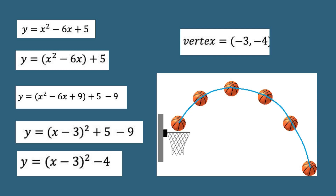We have the equation f(x) = x² − 6x + 5. To solve for our vertex, we have to use the completing the square method. First, we have to group the terms with variable x inside a parenthesis. After that, we have to make the expression inside the parenthesis a perfect square trinomial by dividing the middle term by 2 and squaring it, which will give us 9. Then we have to add 9 inside the parenthesis and subtract 9 from the constant to retain the value of the expression. After that, we have to factor the perfect square trinomial and simplify the constants.